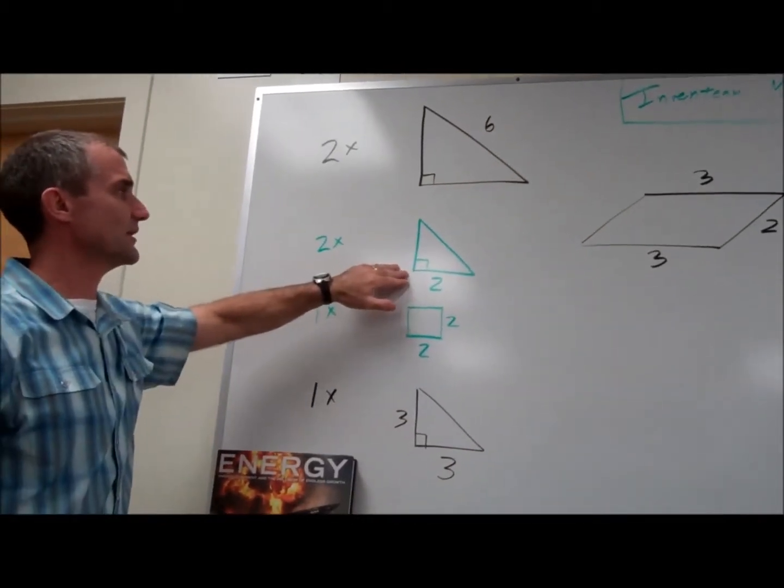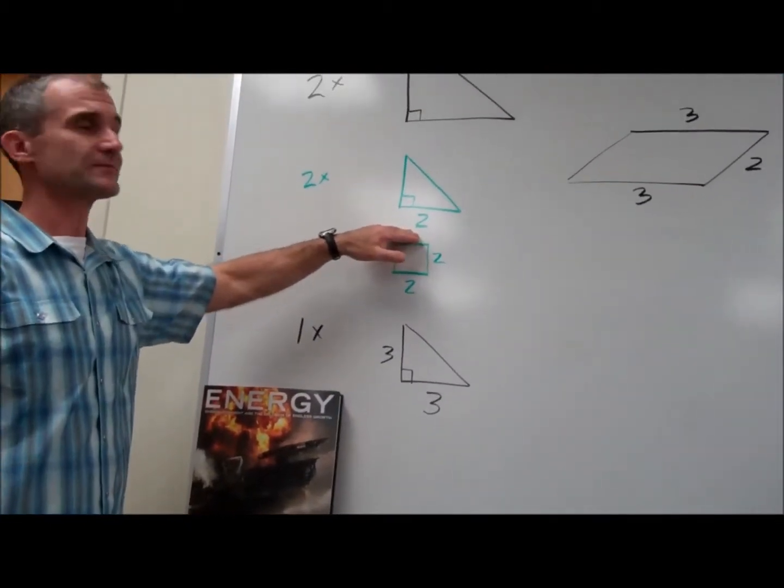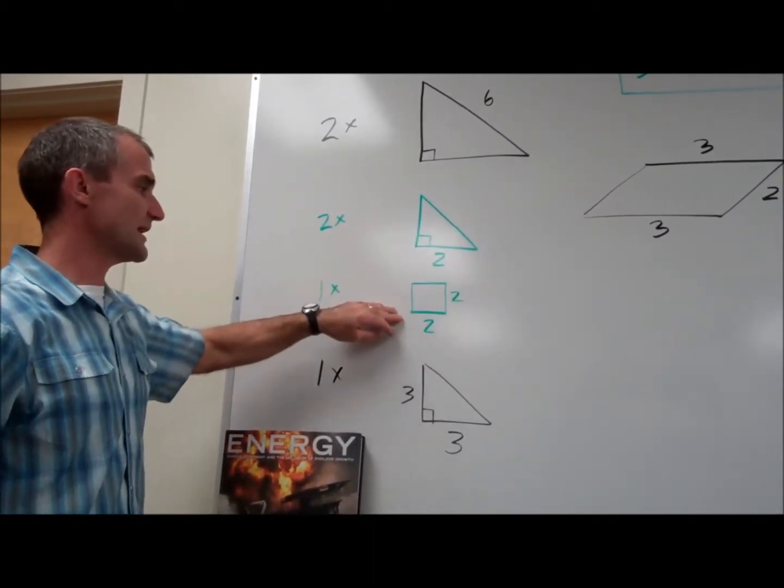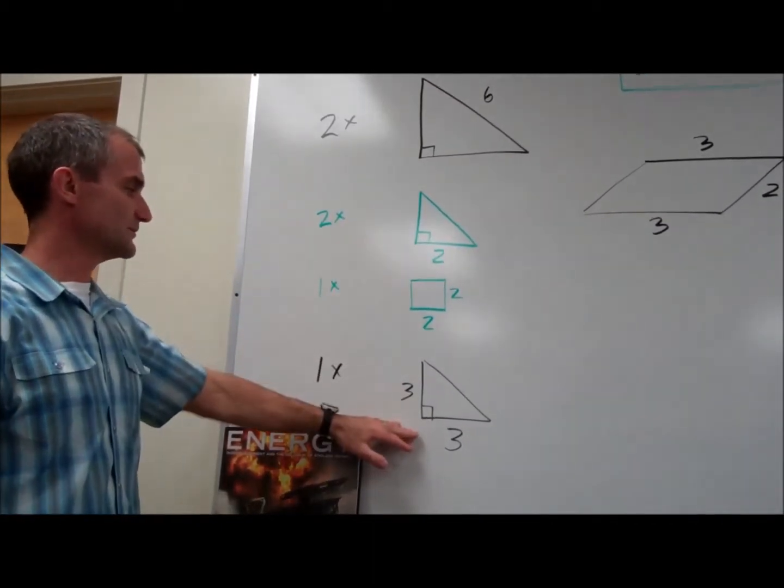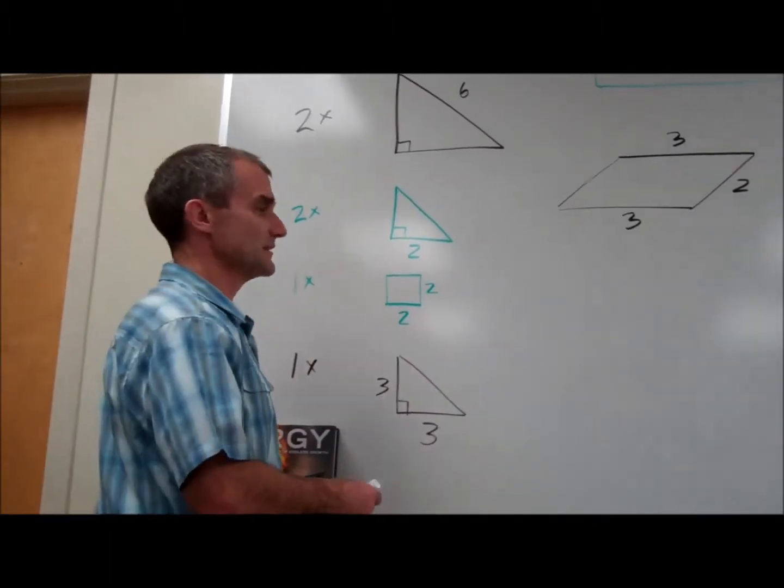However, in the smaller triangles, there are two of these triangles. The legs are two, so this leg is two. The hypotenuse is two root two. The square is exactly two by two. There's one triangle that's three by three, three root two. And then in the parallelogram,